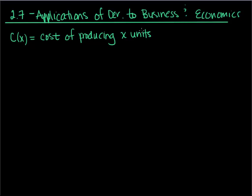It's important to understand what your input is. In this case, it's whatever I want to make. If I'm wanting to make 'math is fun' t-shirts, that would be the number of t-shirts I want to make. If I input 100, C would spit out the amount of money it would cost me to make those t-shirts.